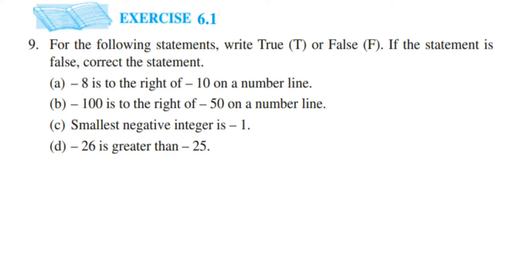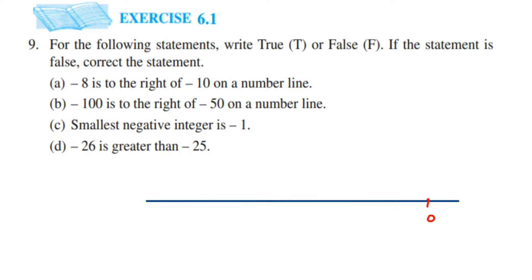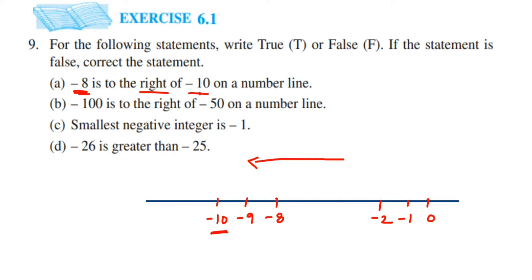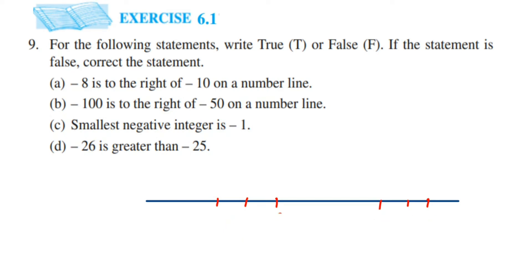The first question is: minus 8 is to the right of minus 10 on the number line. Now suppose this is a number line — negative integers fall on the left hand side. Suppose 0 is here, then minus 1 is on the left of 0, then minus 2, and the numbers keep going. We have minus 8 here, then minus 9, then minus 10. So minus 8 is on the right hand side of minus 10. The statement is true.